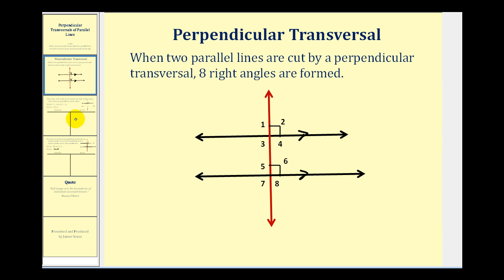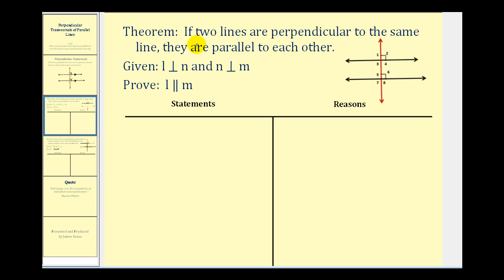Let's take a look at our first theorem. If two lines are perpendicular to the same line, they are parallel to each other. More specifically, if line L is perpendicular to line N and line N is perpendicular to line M, we want to prove that L and M are parallel. This is going to be a pretty straightforward proof.